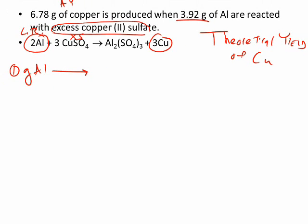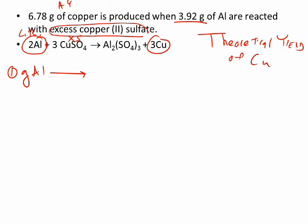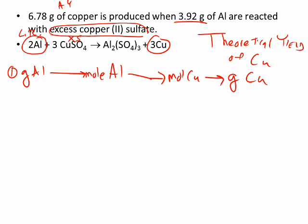We have the actual yield; now we just need the theoretical yield. Percent yield is not difficult at all — it's one extra little step of putting the actual yield over the theoretical yield and multiplying by 100. So we go from grams of aluminum to moles of aluminum, to moles of copper, to grams of copper. Nothing different.